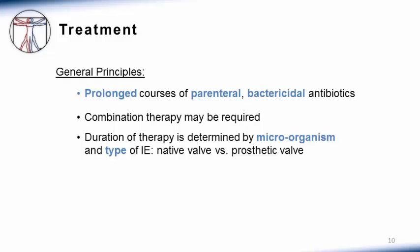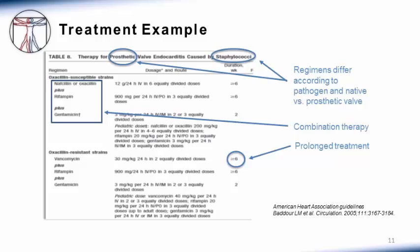The treatment of infective endocarditis relies on prolonged courses of parenteral or intravenous bactericidal antibiotics. Sometimes combination therapy is required. The duration of therapy is determined by the infecting microorganism as well as the type of endocarditis — whether it is native or prosthetic valve infective endocarditis. The specific regimens can be found in the American Heart Association guidelines.